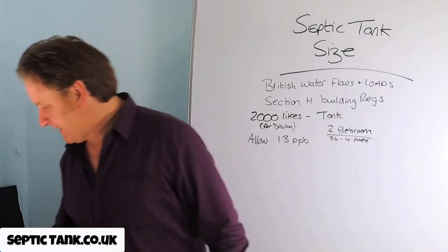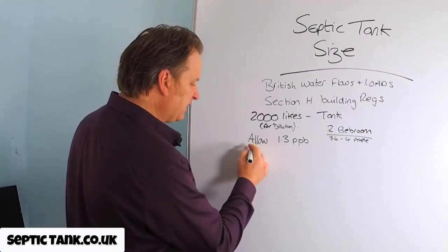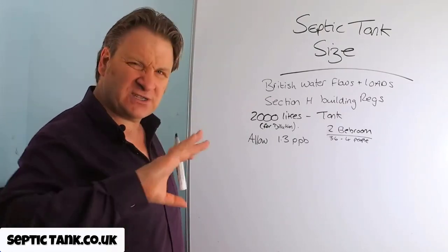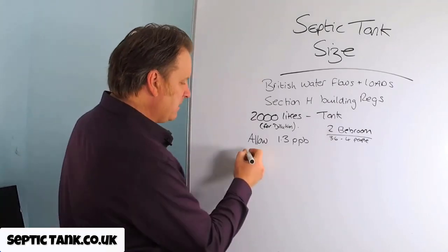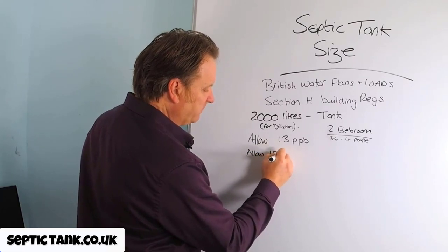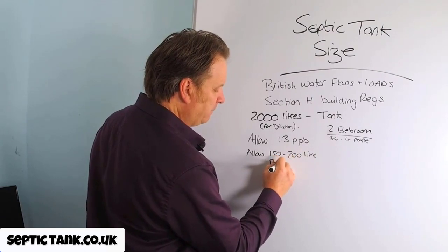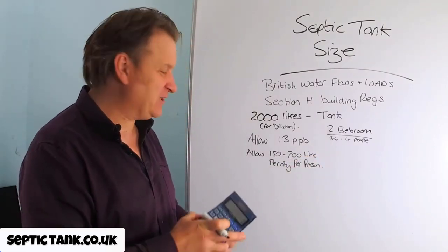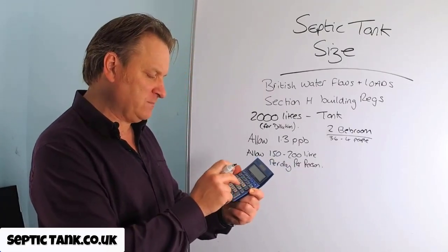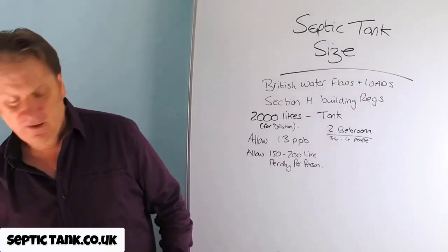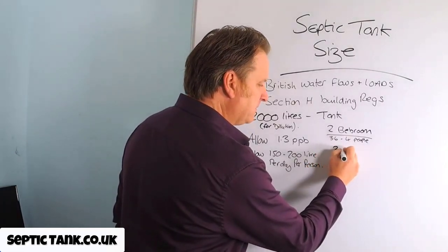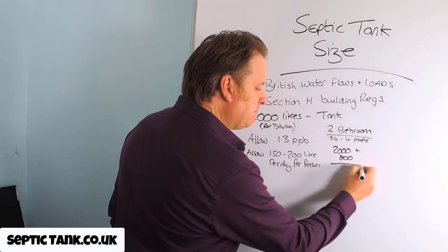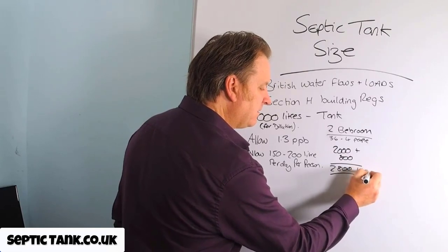We then need to get our calculator because British Water states that in a domestic property — a standard domestic house where you and I live 24/7 — you are to allow anywhere from 150 to 200 litres per person per day. I'm going to err on the side of caution and go for 200 litres. So we've got four people: four times 200 equals 800 litres. Take our base figure of 2,000, plus 800, and we would need a minimum of a 2,800 litre septic tank.